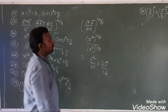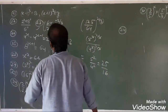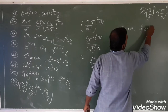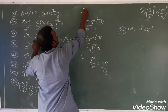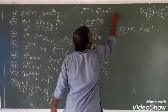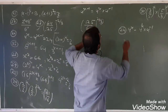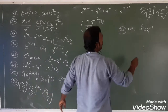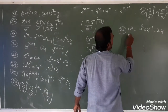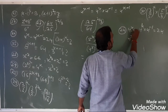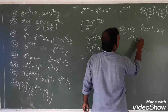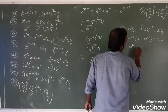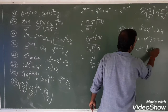Question number 24: 4 to the power x minus 4 to the power (x minus 1) equals 24. Now, 4^(x-1) can be broken as 4^x into 4^(-1), because base is same so you can split the power. So we have 4^x common. Taking 4^x common: 4^x times (1 minus 4^(-1)) = 24. Here 4^(-1) means 1 upon 4, so it becomes 4^x times (1 minus 1/4) = 24.